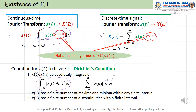The signal must also have some finite value and must not go to divergence. We call these the Dirichlet conditions. Also, X of T must have a finite number of maxima and minima within any finite interval. And also, X of T must have a finite number of discontinuities within some finite interval. We call these the conditions for X of T to have a Fourier transform. Sometimes we call these the Dirichlet conditions.